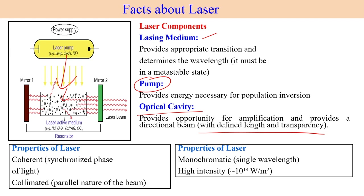The wavelength cannot be changed — it is decided by the lasing medium. The pump excites the lasing medium to emit laser light. The optical cavity creates a directional beam as output. If we place a lens in the path of the parallel laser beam, we can converge or diverge the laser light depending on the type of lens used.